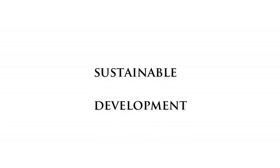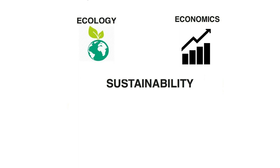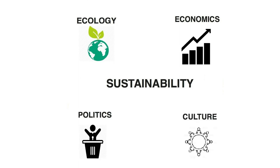Sustainability science is the study of sustainable development and environmental science. The organizing principle for sustainability is sustainable development, which includes the four interconnected domains: ecology, economics, politics and culture.